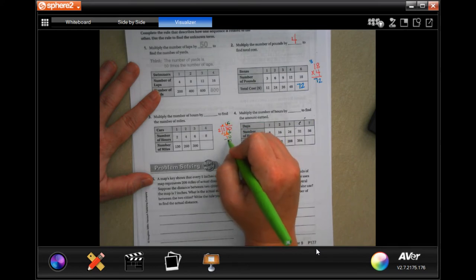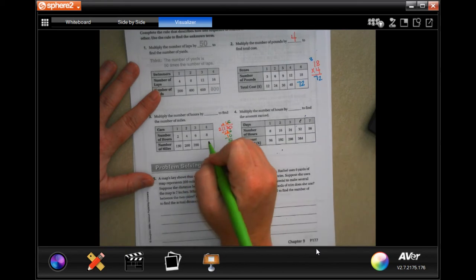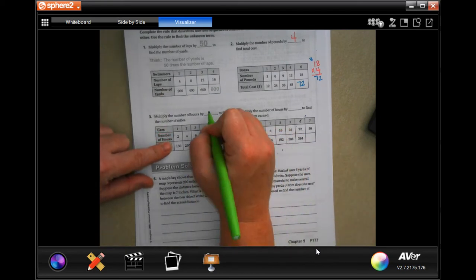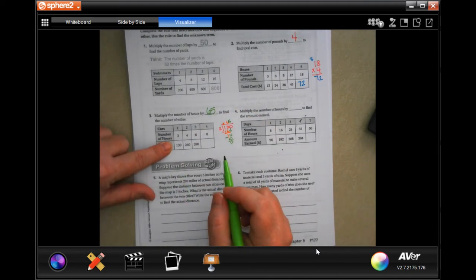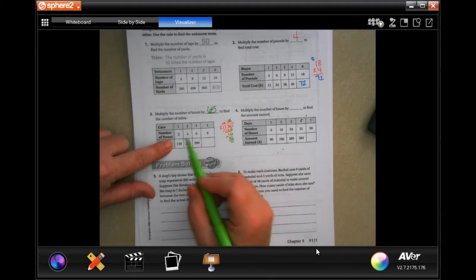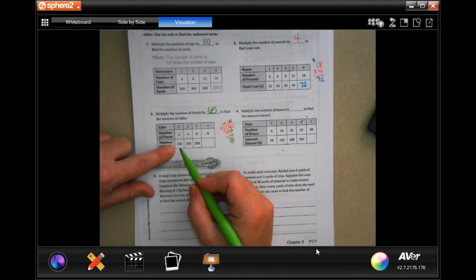So we are multiplying the number of hours by 65 to find the number of miles. Two times 65 is 130.